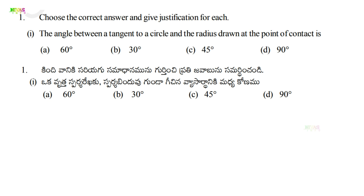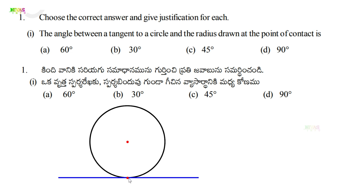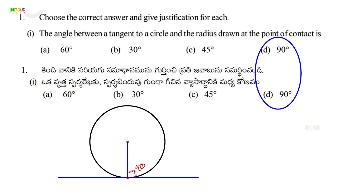The angle between the tangent and radius — what angle does it create? Draw a circle, draw one tangent, and from the center draw the radius to that point of contact. By Theorem 9.1: 'The tangent at any point of a circle is perpendicular to the radius through the point of contact.' So the answer is 90°. Option D is the right answer.